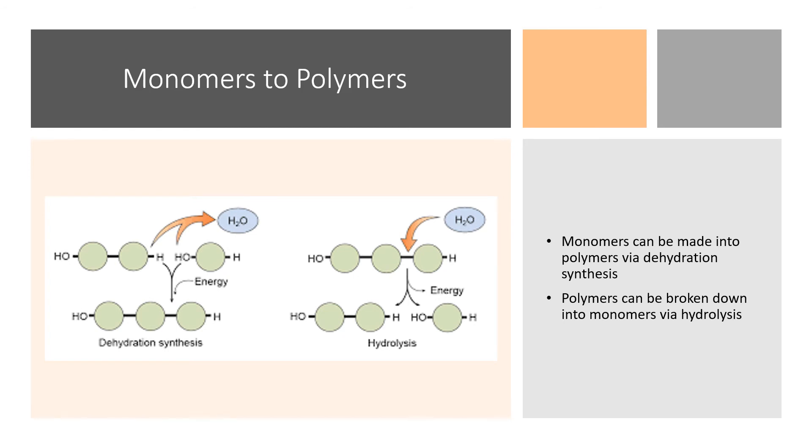Monomers can be made into polymers by dehydration synthesis. Polymers can be broken down into monomers by hydrolysis. Notice the difference in terminology. Monomers becoming polymers by the process of dehydration synthesis can be made into, can be built into, is an anabolic process. Polymers can be broken down into monomers. Big multi-molecule molecules can be broken down into single molecular units. That is a catabolic process.